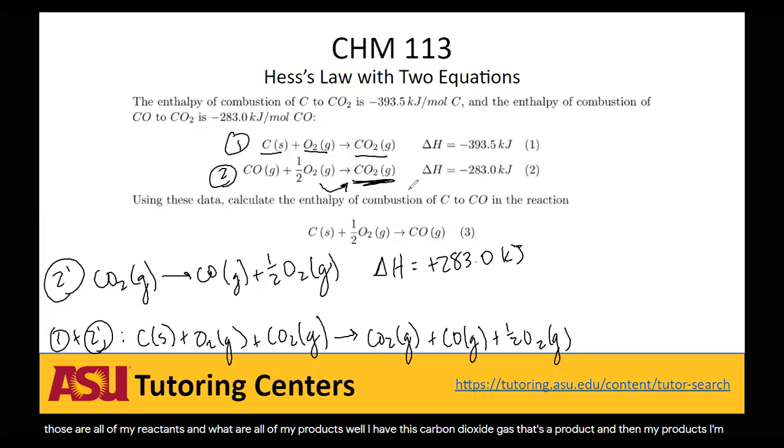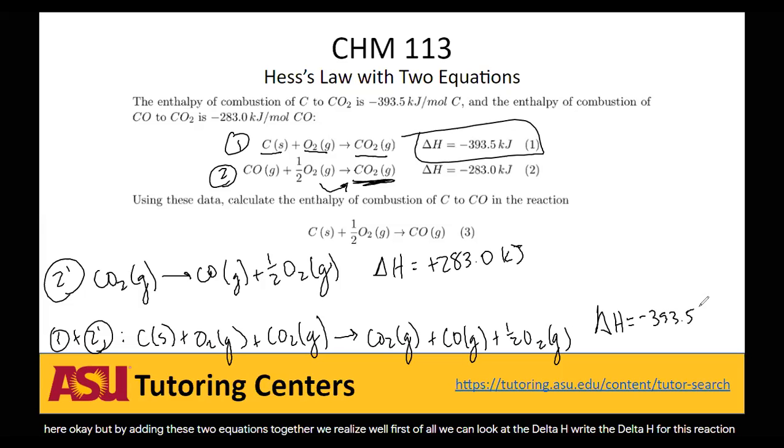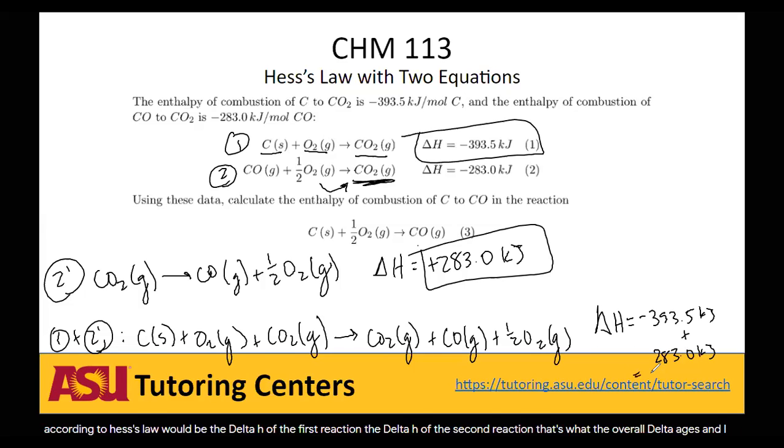But by adding these two equations together, we realize, well first of all, we can look at the delta H. The delta H for this reaction, according to Hess's law, would be the delta H of the first reaction plus the delta H of the second reaction. That's what the overall delta H is. And I can do that math for you real quick, negative 109.5 kilojoules.